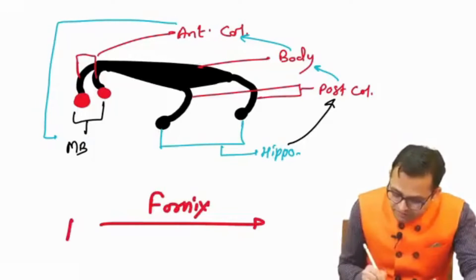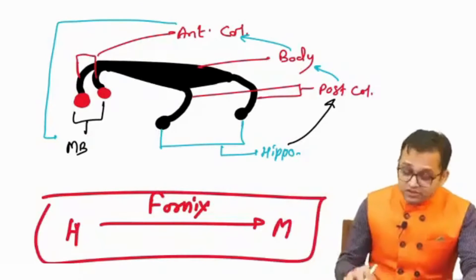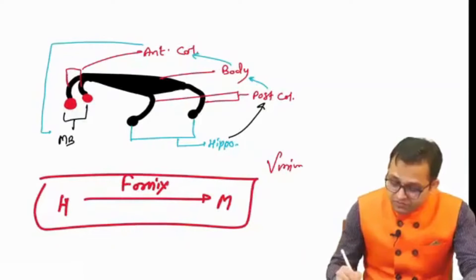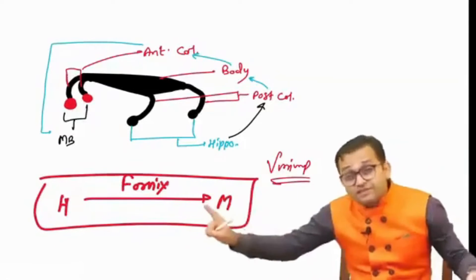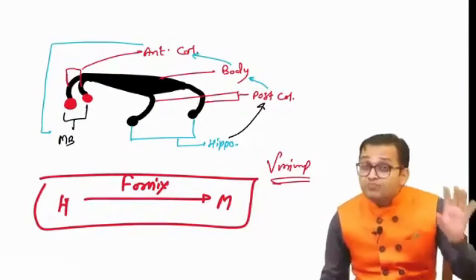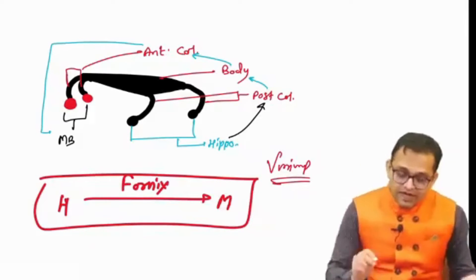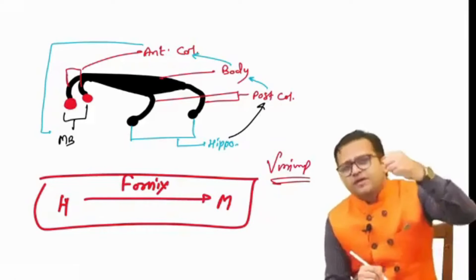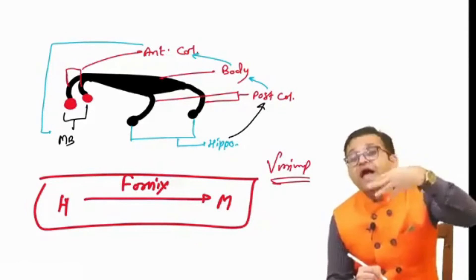Simply put: fornix is carrying impulse from hippocampus to mammillary body. This question has been asked many times. Fornix is carrying the impulse from — with a cadaveric image shown — and the answer options were hippocampus, mammillary body, amygdala, and habenula.